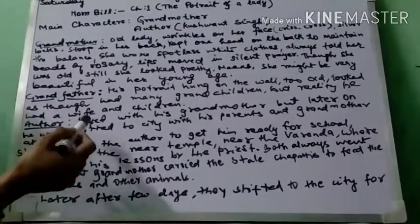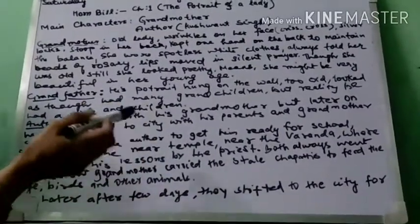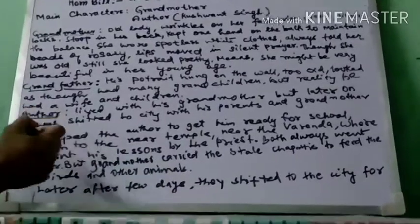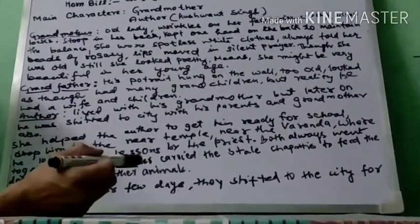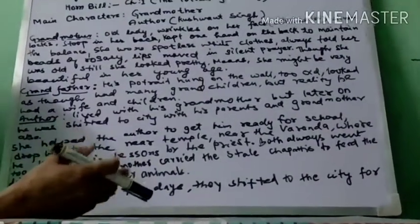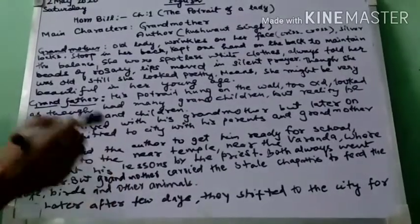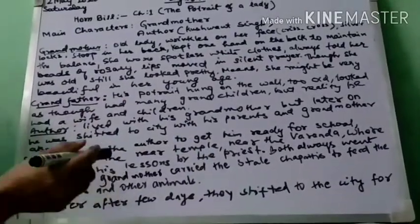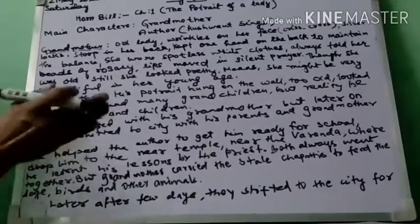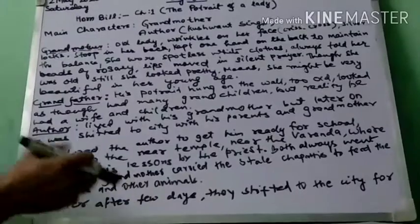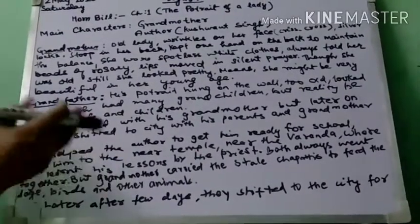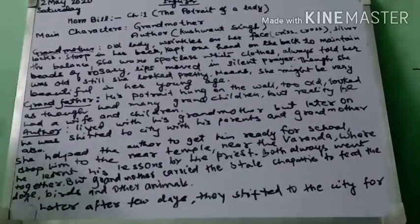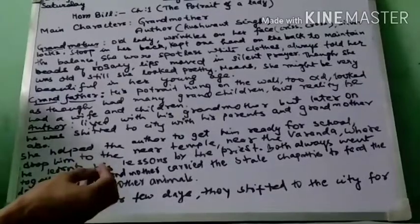As we come to the author — he is living with his grandmother in the village. The grandmother and the author have a very good bonding, good cooperation and mutual understanding. The grandmother helped the author get ready for school, dropped him to school, and helped him understand Hindi rituals, customs and traditions, which were also taught by the priest in the nearby village. Both always went and came together. While going, the grandmother always carried some stale chapatis — stale means basi — to feed the dogs, birds and other animals.